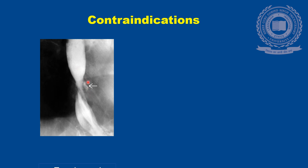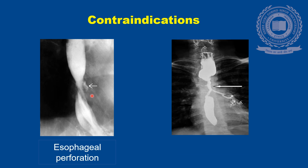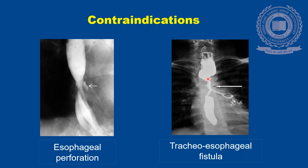Regarding contraindications: in this image we can see barium leaking from the esophageal column, indicating a case of esophageal perforation. This is a serious medical emergency with a very high mortality rate, and if barium is given in perforation it can lead to mediastinitis, empyema, and even sepsis. Another common contraindication is tracheoesophageal fistula — a very fatal condition if not treated aggressively — because if there is a fistulous communication between the trachea and esophagus, barium can leak from the esophagus into the tracheobronchial tree, causing pneumonitis.